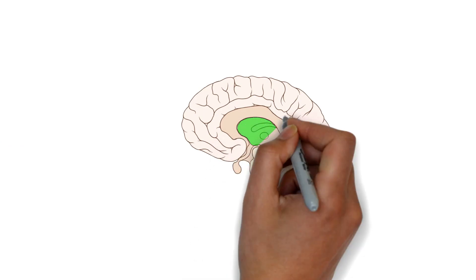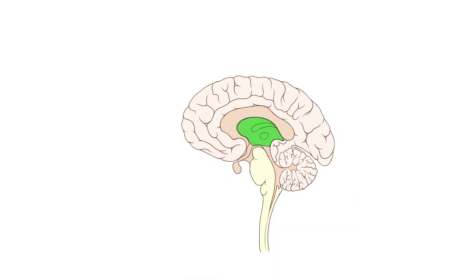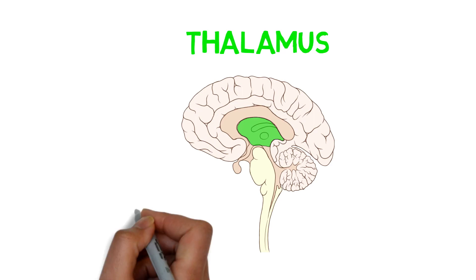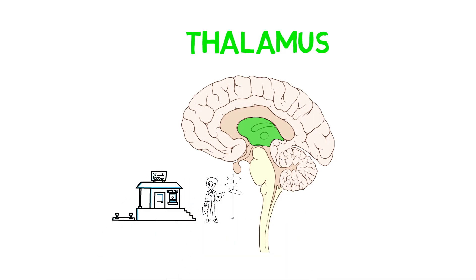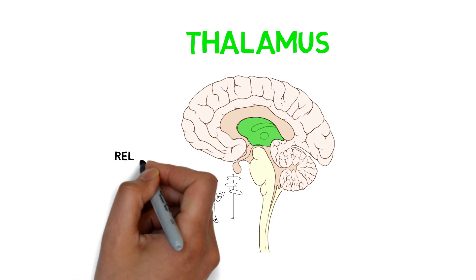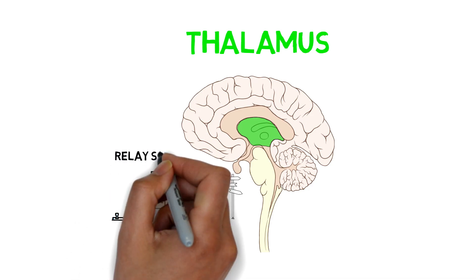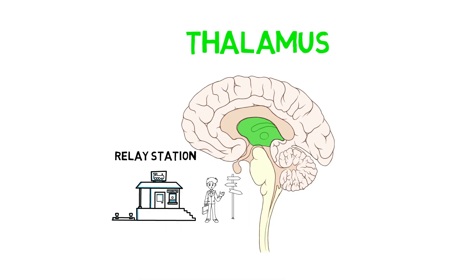Further up and above the brain stem, right there in the middle of your brain, is the thalamus. Imagine a busy train station like Grand Central Station or London Waterloo, where trains are constantly arriving and departing. Like a busy station, the thalamus is constantly receiving messages from all over the brain. It has to sort them and make sure they are relayed to the correct destination in the brain.